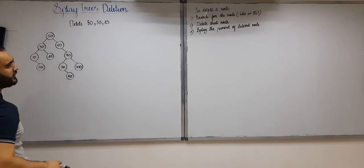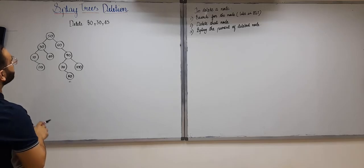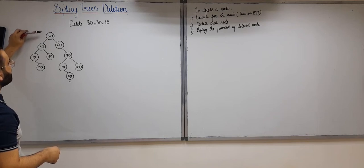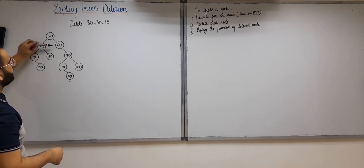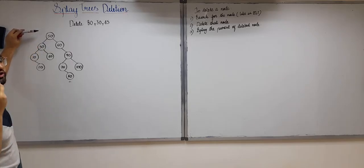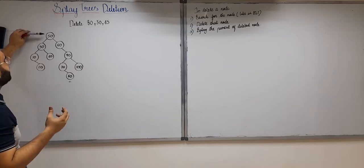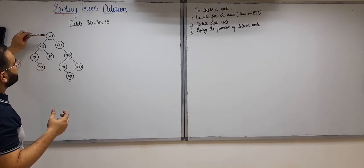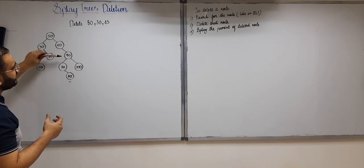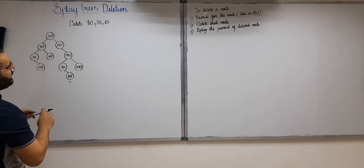Now let us look at an example. We have a splay tree and we will delete several elements from it. The first element to delete is 80. In order to delete 80, we first search for it as we do in a BST. 80 is greater than 50, so we go right. 80 is greater than 60, so we go right again. 80 is less than 90, so we go left. 80 is greater than 70, so we go right, and we find 80.